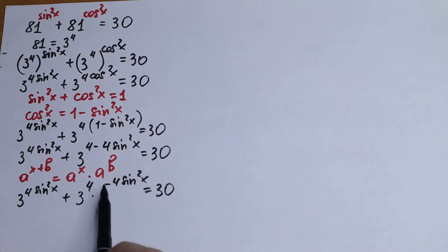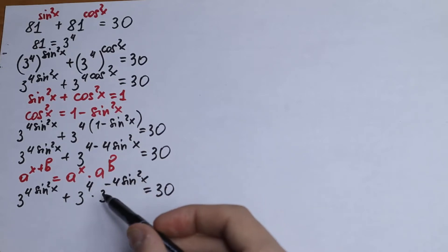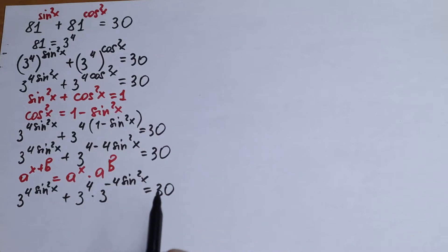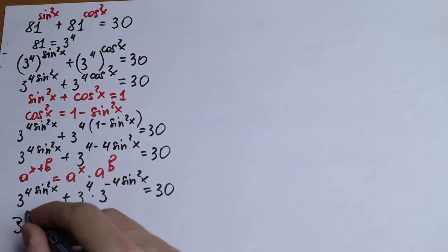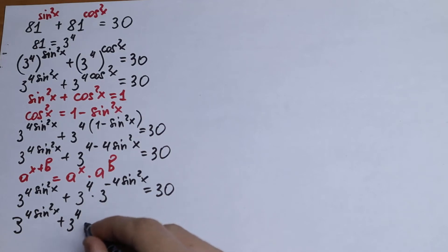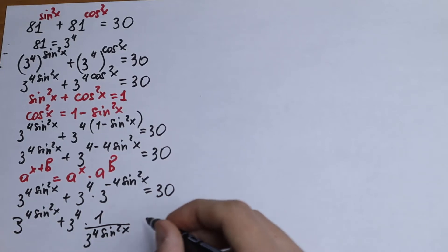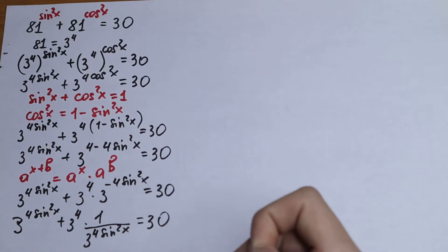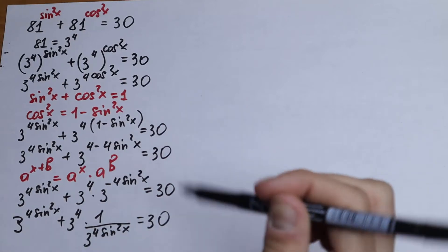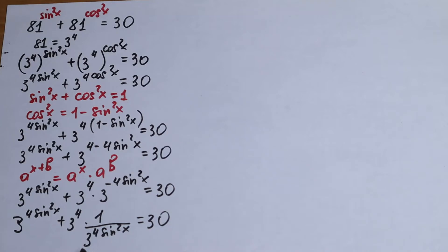If we have a minus in our exponent, we can bring 3 to the power (−4sin²x) to the denominator, giving us a plus. So we have 3 to the power 4sin²x, plus 3 to the fourth power times 1 over 3 to the power 4sin²x, equal to 30.